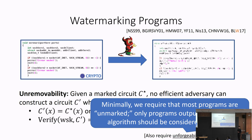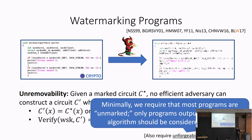There is also a third requirement: unforgeability, a non-triviality requirement. Without it, we could trivially satisfy the previous notions by just saying every program is watermarked. The unforgeability property says that most programs should be considered unmarked — only programs output by the marking algorithm should be considered marked.